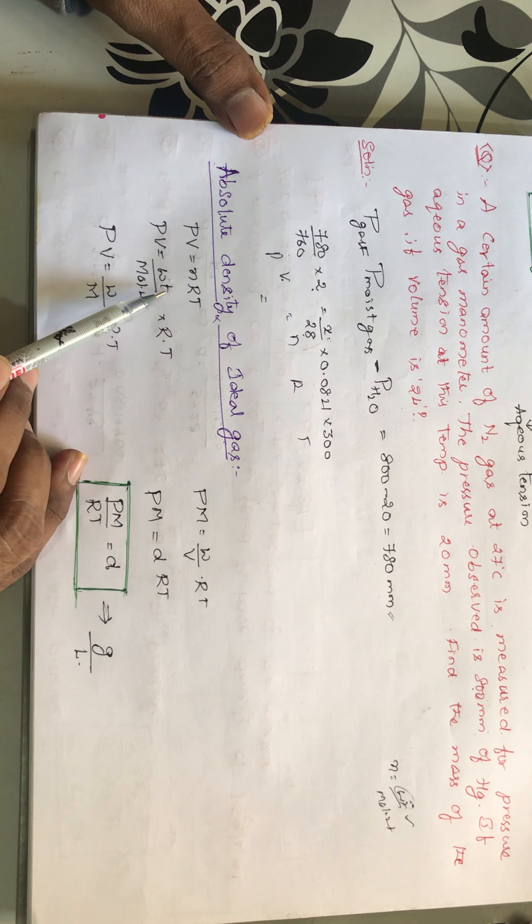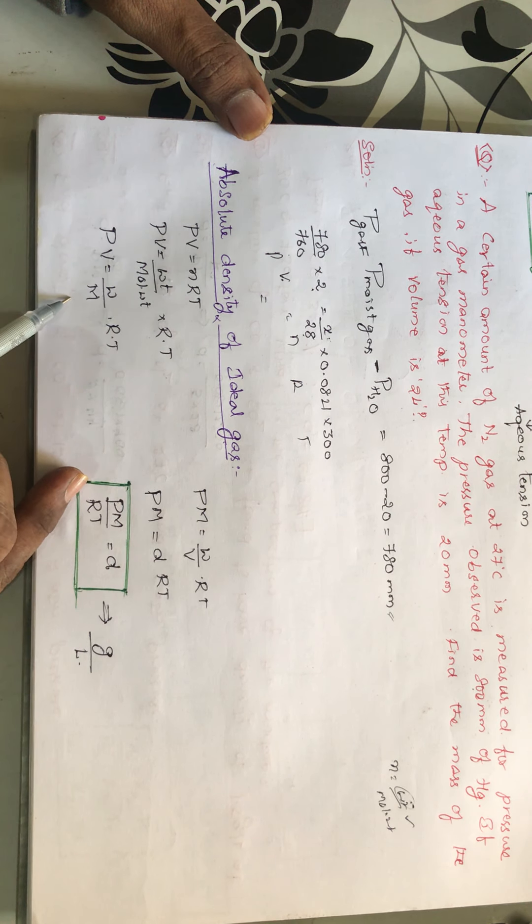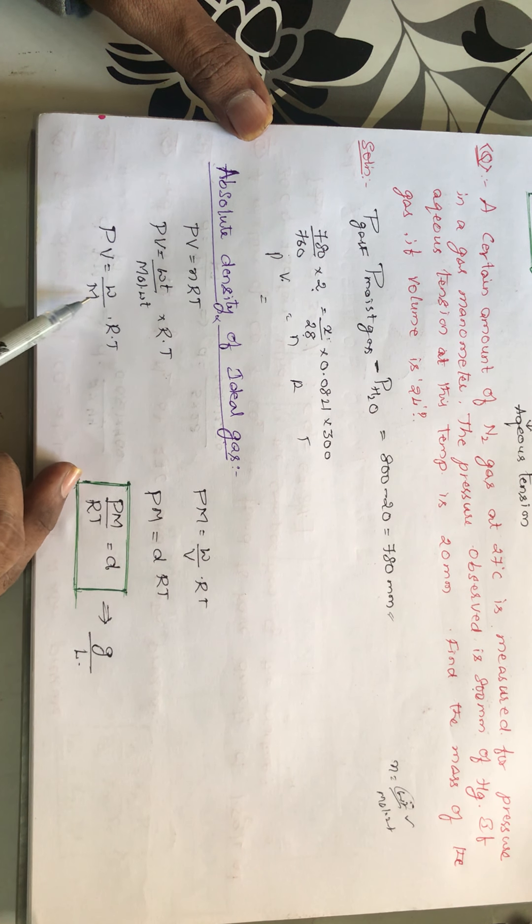PV equals N, which is nothing but weight by molecular weight into RT. Suppose I am writing this weight in terms of W and molecular weight as capital M. So PV equals W by capital M into RT.